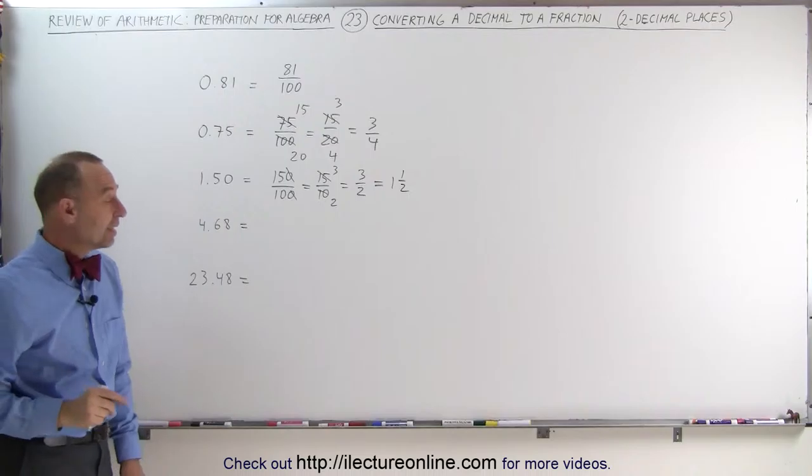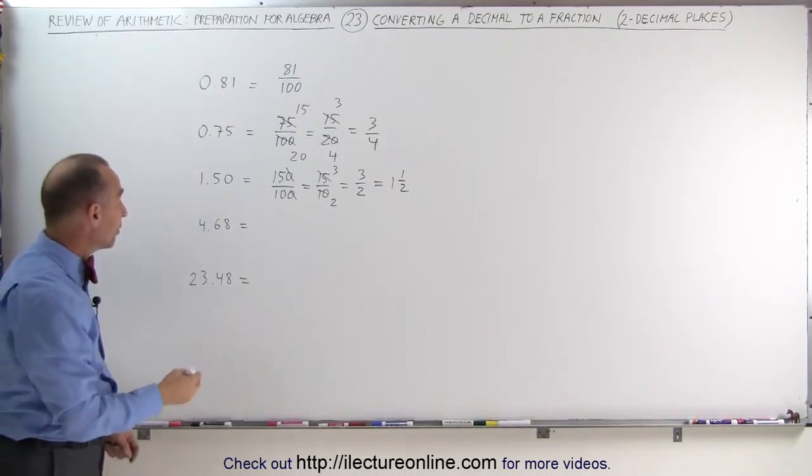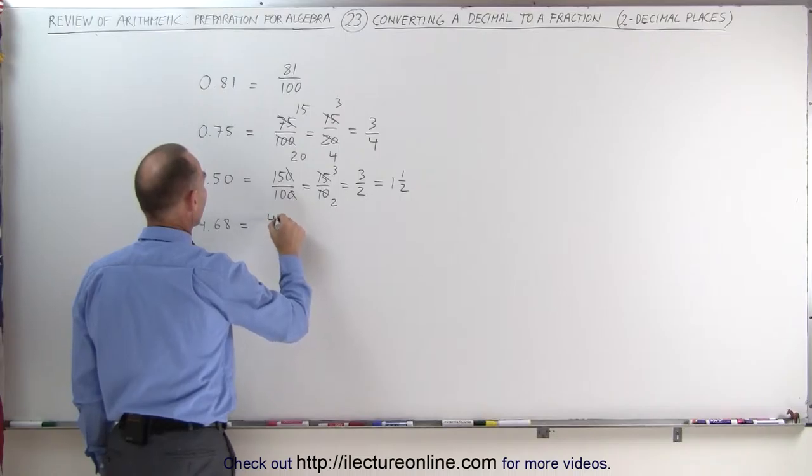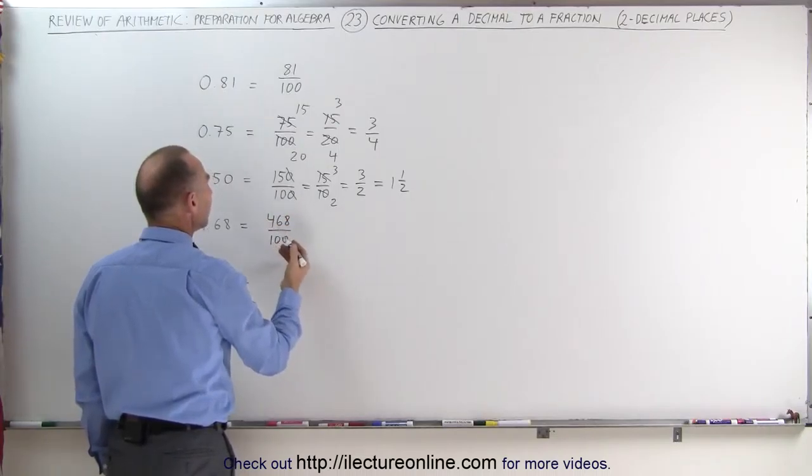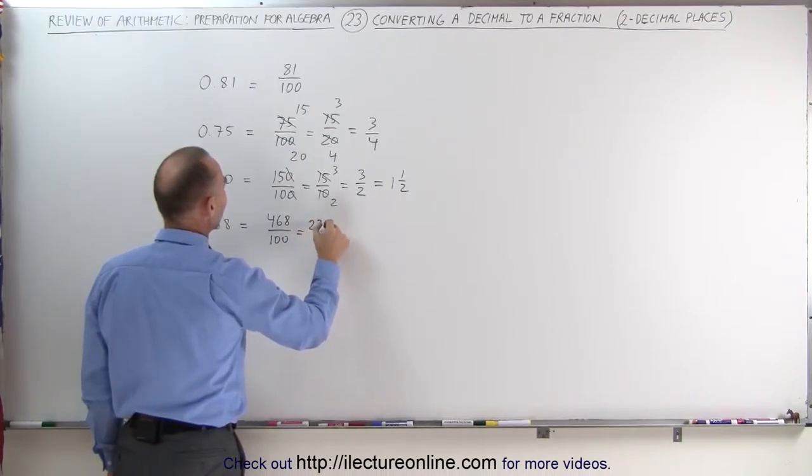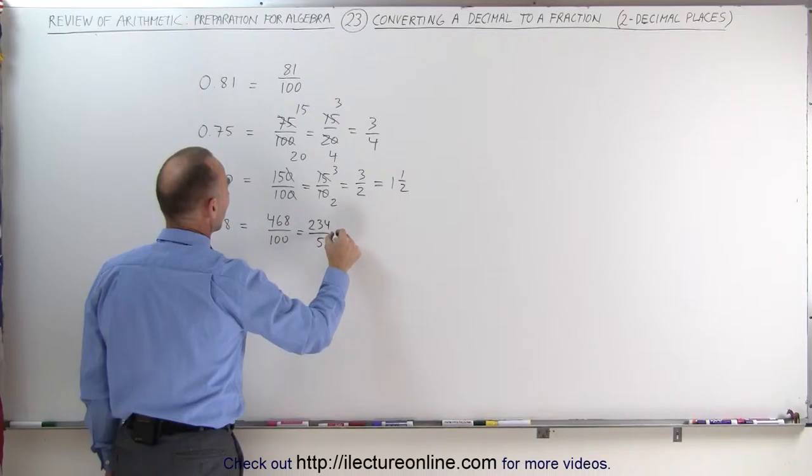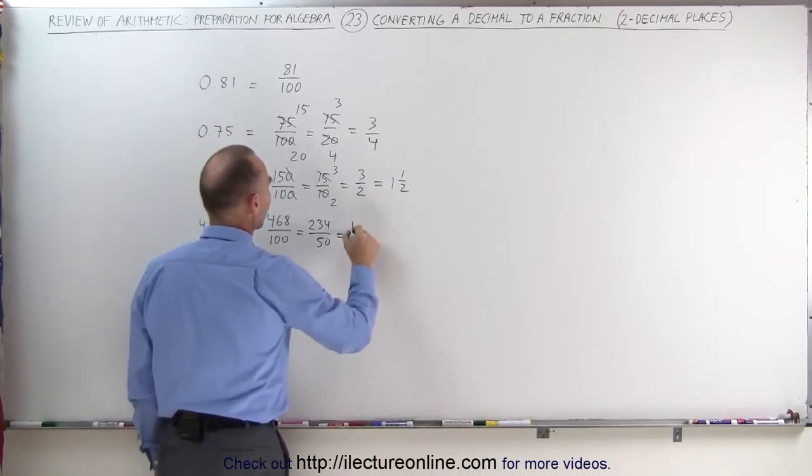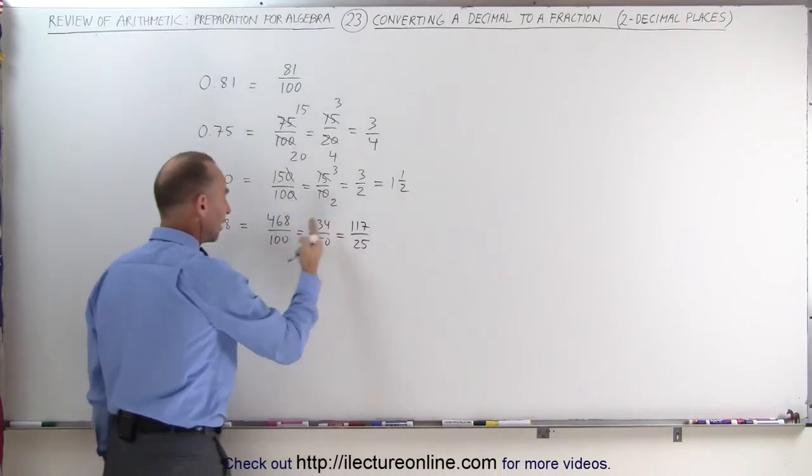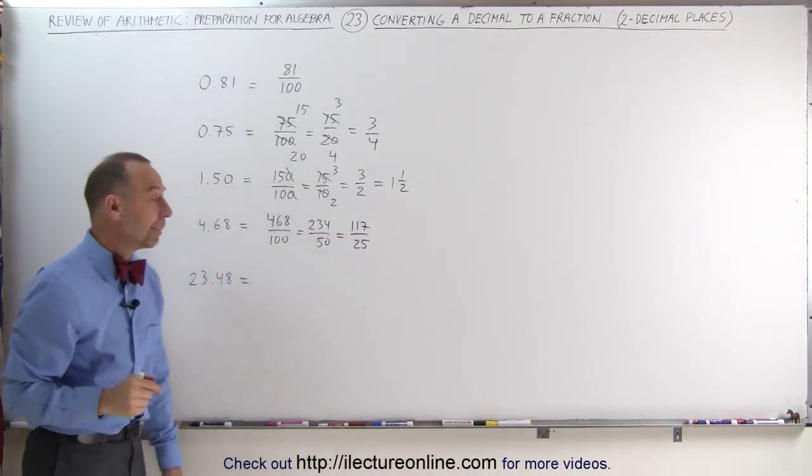Same with 4.68. We can convert that to a fraction simply by removing the decimal point and dividing by 100. This can be written as 468 divided by 100. They're even so we can divide it by 2. This can be written as 234 divided by 50, which can be written as 117 divided by 25, simply by dividing the numerator and the denominator by 2.